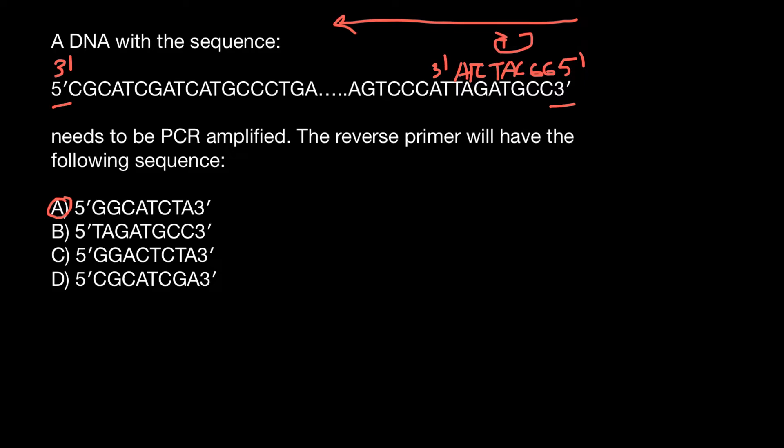What else I want to show you is the forward primer, though it is not a question. If we finish this strand of DNA, we will have something like this: guanine would be paired with cytosine, guanine, adenine, thymine, guanine, cytosine, and guanine.